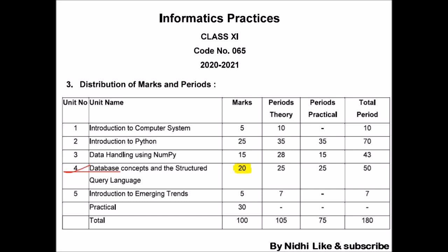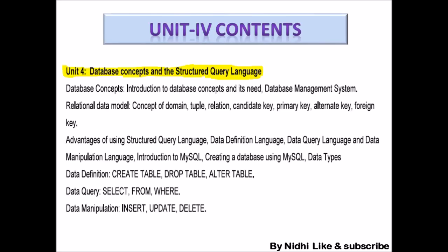You will also study this same unit in Class 12 with more details and new features. The contents of Unit 4 cover: an introduction to database concepts and its need, the definition of a database management system, the relational data model and related terms like domain, tuple, relation, candidate key, primary key, and so on. After that, we will do structured query language queries, see their classification, and perform related practicals.